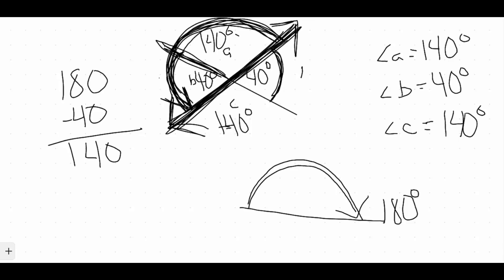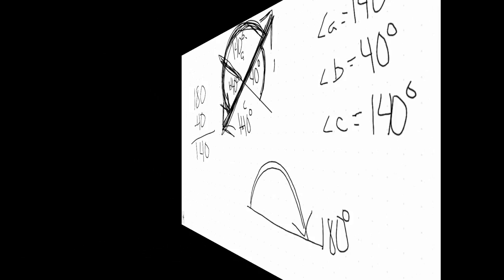So by using those two principles there, using vertical angles and supplementary angles, we are able to find the missing angles for this particular figure here.